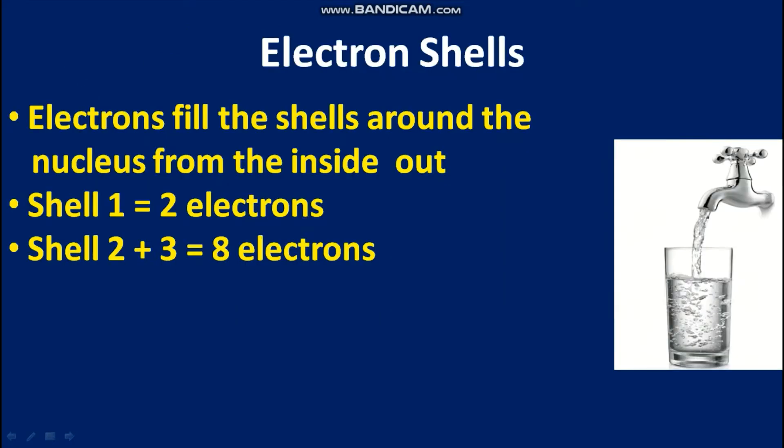Electron shells. In the previous video we talked about the periodic table and how it's categorised. One of the ways it is categorised that I mentioned was by the number of electrons an element consists of. And as I explained before, these elements orbit around the nucleus in electron shells. The electrons fill the shells around the nucleus from the inside out.